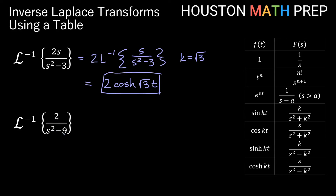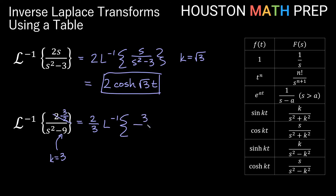For 2 over s squared minus 9, this fits the sinh kt formula. We can see k equals 3, but the formula needs k on top and 2 is not 3. So we adjust: multiply inside by 3 halves — replacing 2 with 3 — and multiply outside by 2 thirds to balance. That gives 2 thirds times the inverse transform of 3 over s squared minus 9, which equals 2 thirds sinh of 3t.